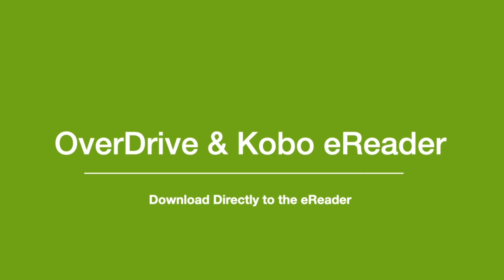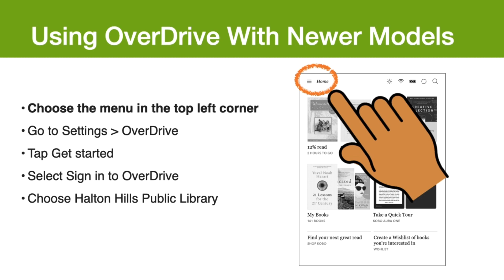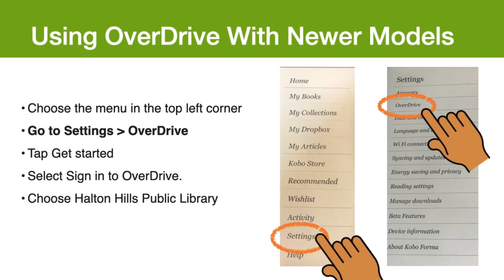First, we'll go through the Kobo models on which books can be downloaded directly to the eReader. With the models mentioned previously, Overdrive is programmed directly onto the device itself. To sign in to your library account, you first have to go to the menu in the top left corner. Then go to Settings and click Overdrive.